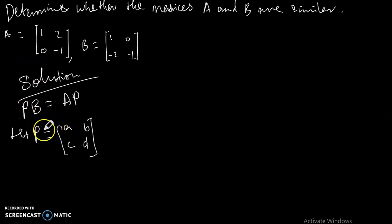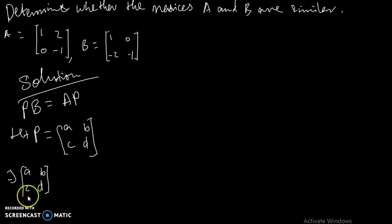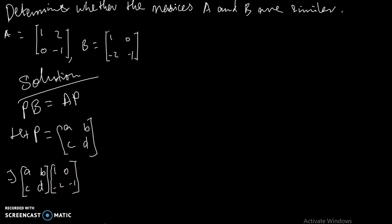So PB implies we multiply matrix P, which is [A, B; C, D], by matrix B which is [1, 0; -2, -1]. This gives us matrix PB.